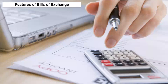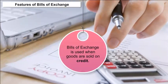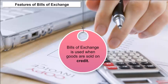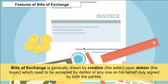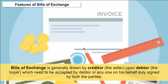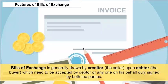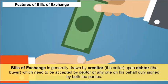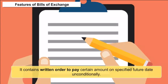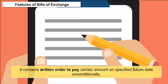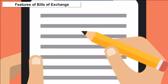Features of Bills of Exchange: A bill of exchange is used when goods are sold on credit. It is generally drawn by the creditor, the seller, upon the debtor, the buyer, which needs to be accepted by the debtor or anyone on his behalf, and duly signed by both parties. It contains a written order to pay a certain amount on a specified future date, unconditionally.